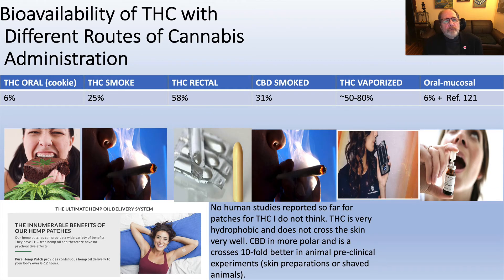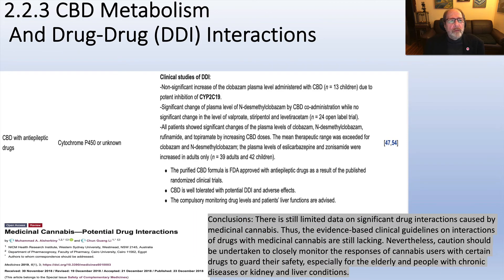We'll talk about the bioavailability of cannabinoids via different routes. For instance, orally — if you eat a cookie — only 6% is available, but if you smoke or vaporize it, you can get up to 50–80%. We'll also talk about how CBD affects cytochrome P450 enzymes and its effects on other drugs. This is important because many people are taking CBD while also taking other medications.